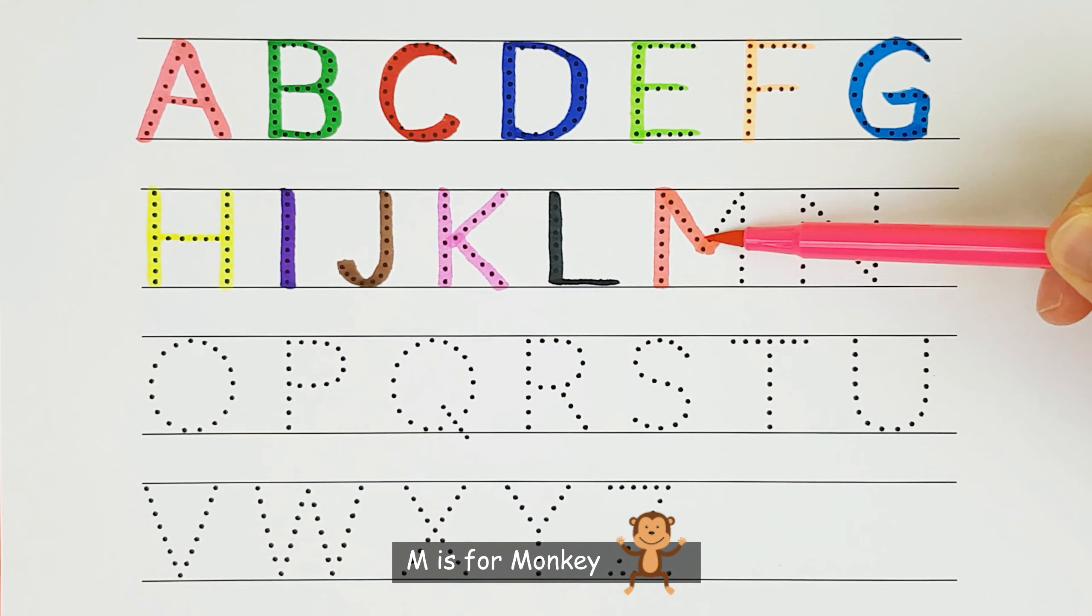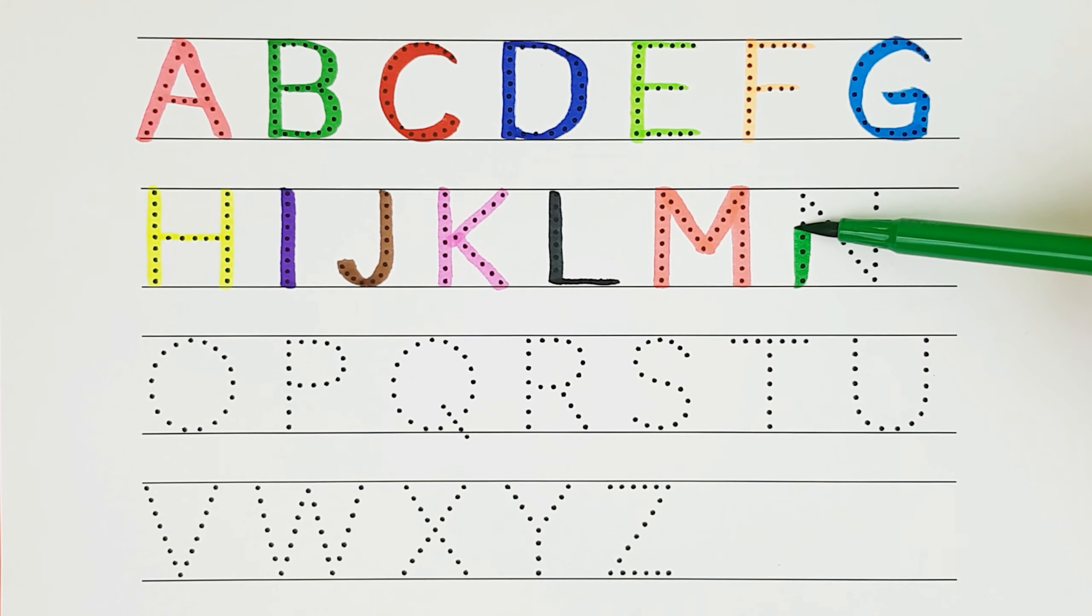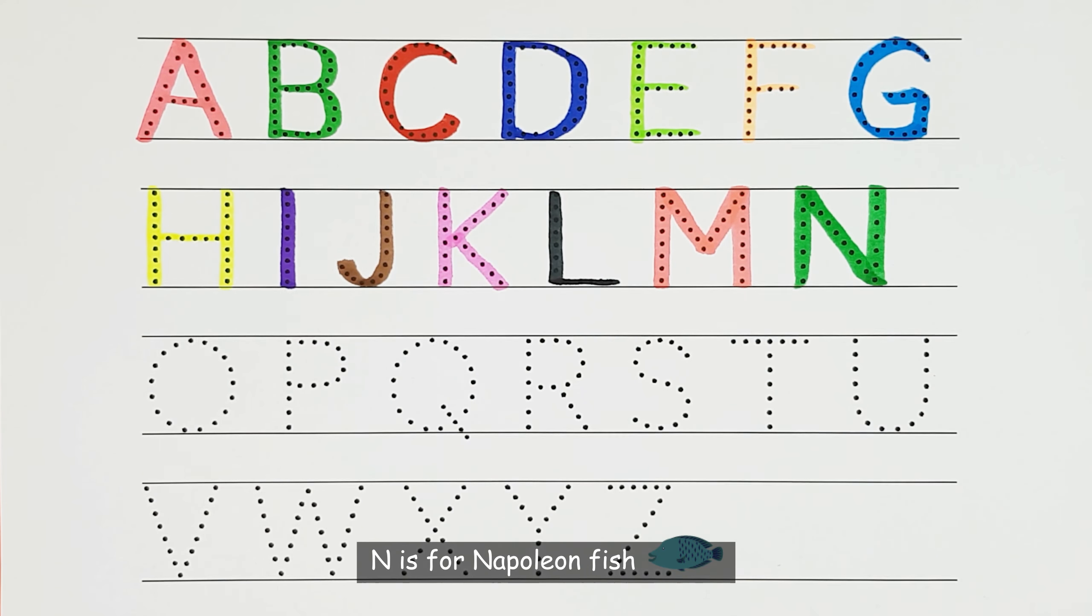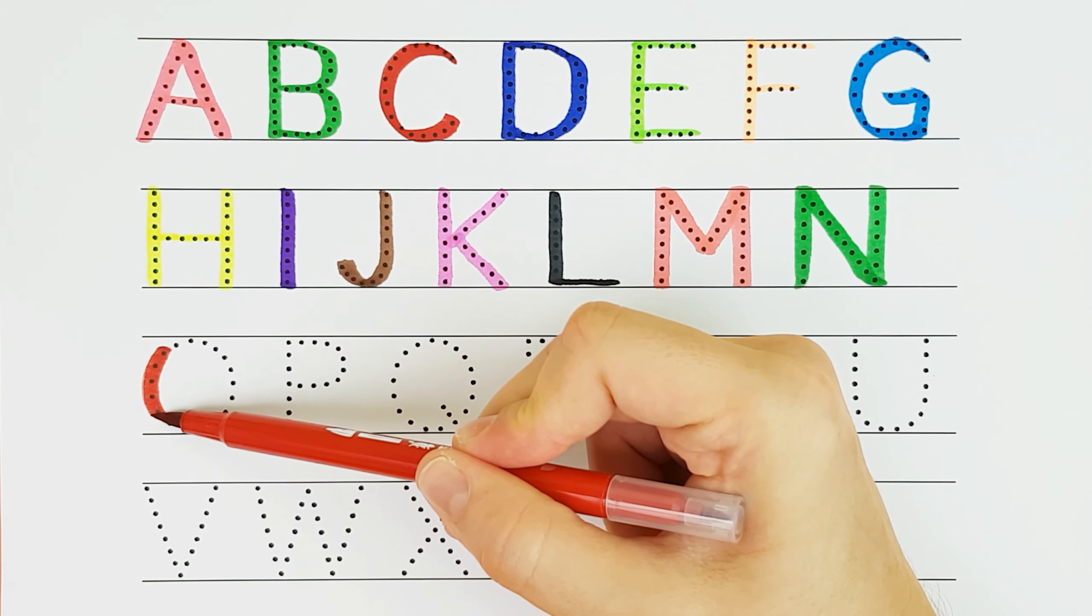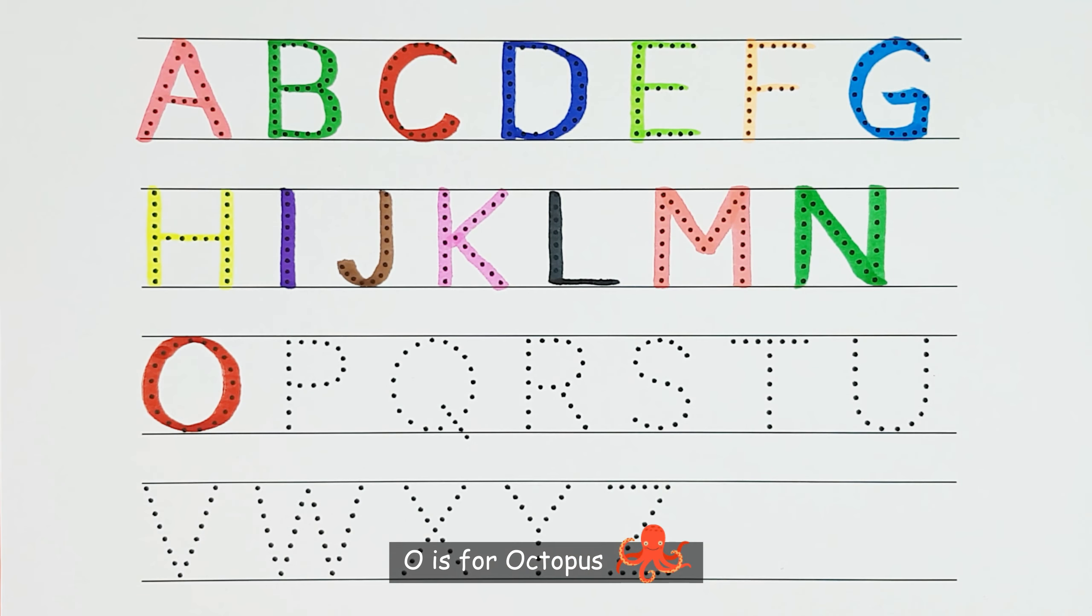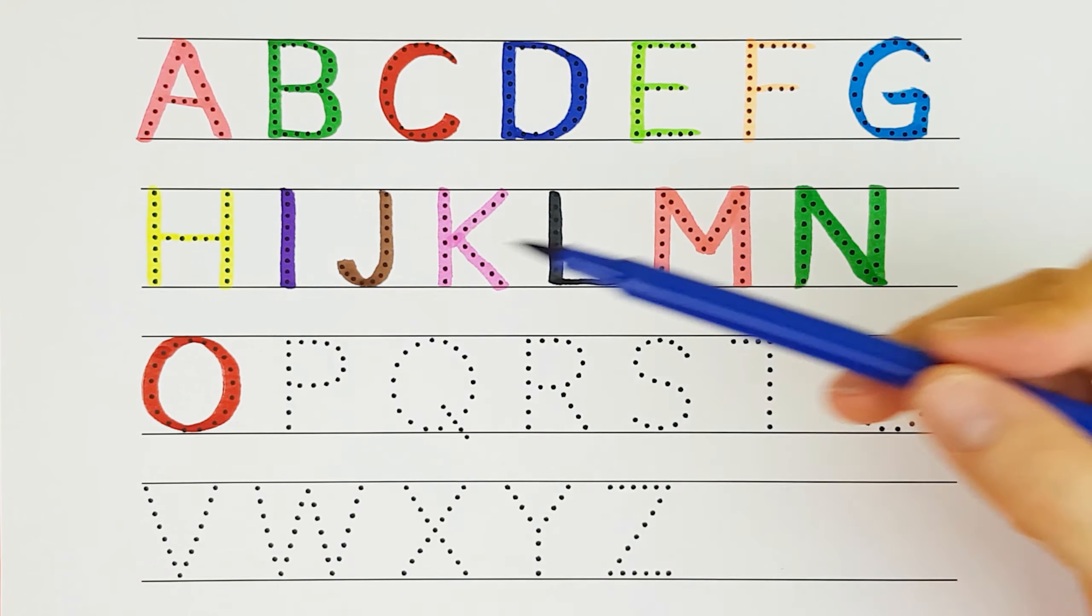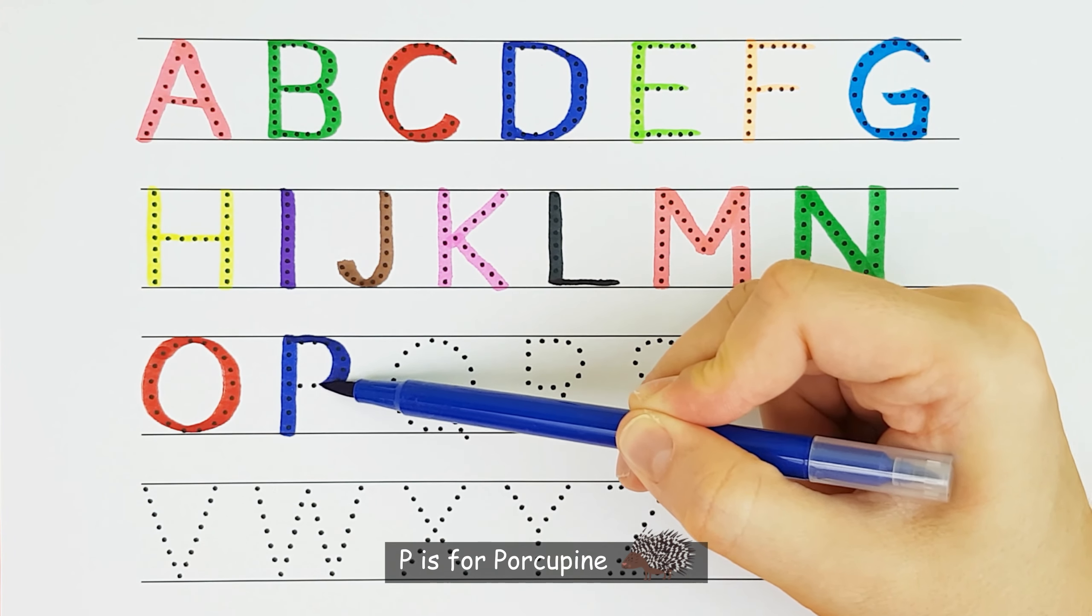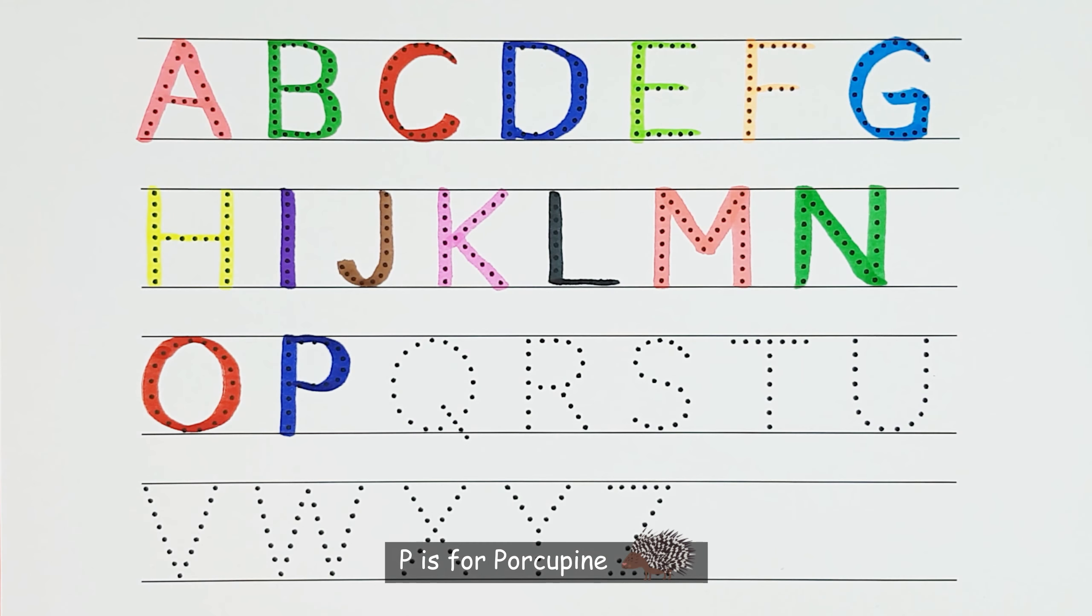M. M is for Monkey. M. N. N is for Napoleon Fish. N. O. O is for Octopus. O. P. P is for Porcupine. P.